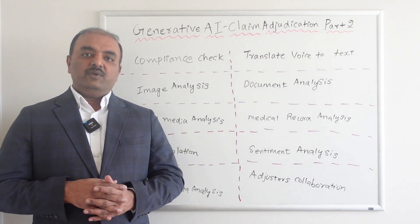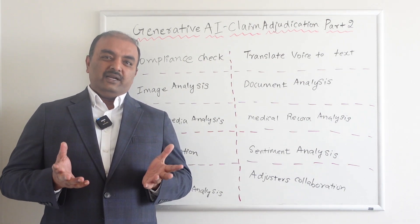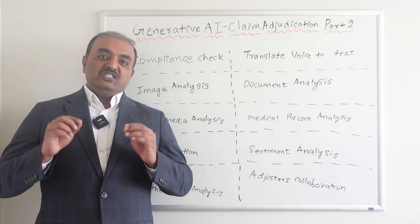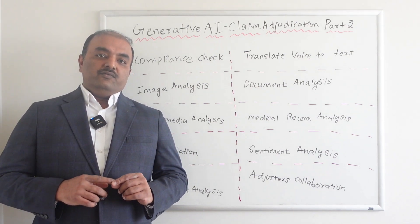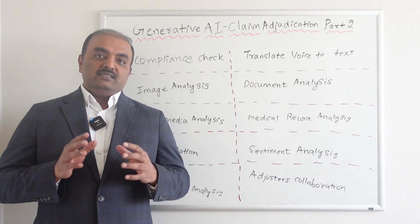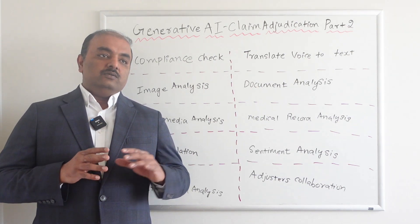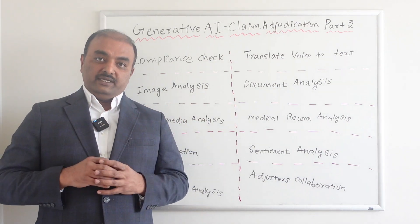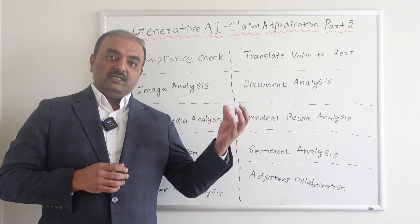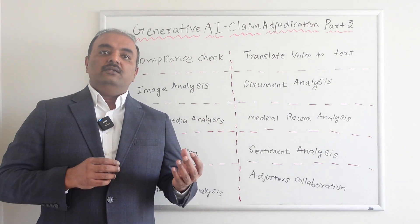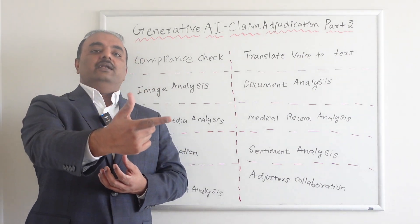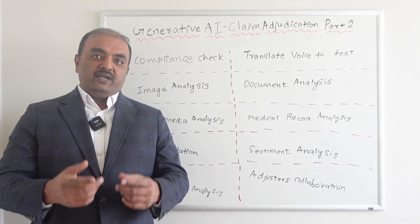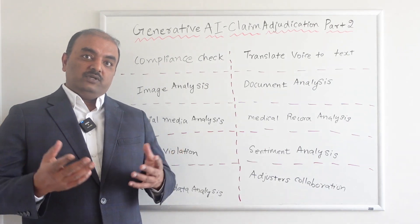Weather data analysis is another use case, related to what people are calling parametric insurance. Nowadays, instead of adjusters manually reviewing the claim, if the AI system is able to pull data from various sources regarding the weather and there is a confirmed loss due to weather, it can immediately create a payment without an adjuster looking at it. Parametric insurance is one of the good examples of this.